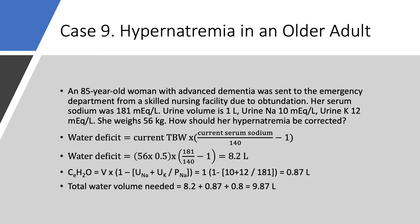Case number 9, hypernatremia in an older adult. An 85-year-old woman with advanced dementia was sent to the emergency department from a skilled nursing facility due to obtundation. Her serum sodium was extremely high at 181. This happens when patients stop drinking and eating while their loop diuretic — furosemide or torsemide — is continued. Urine volume is very low at one liter. Urine sodium is 10. Urine potassium is 12. She weighs 56 kilograms.